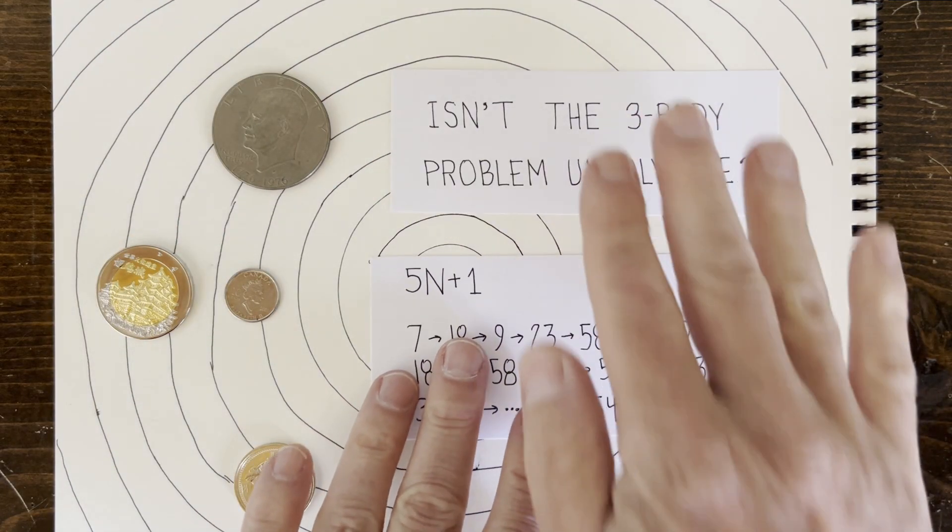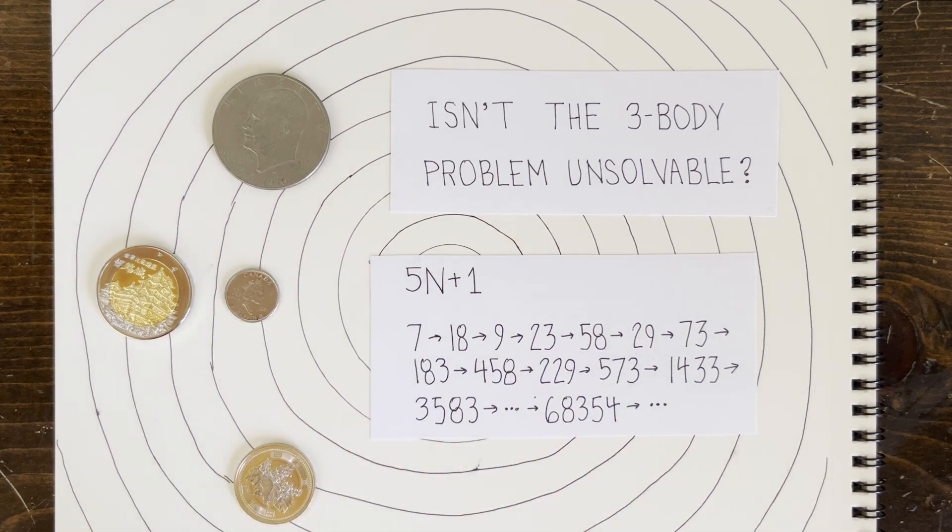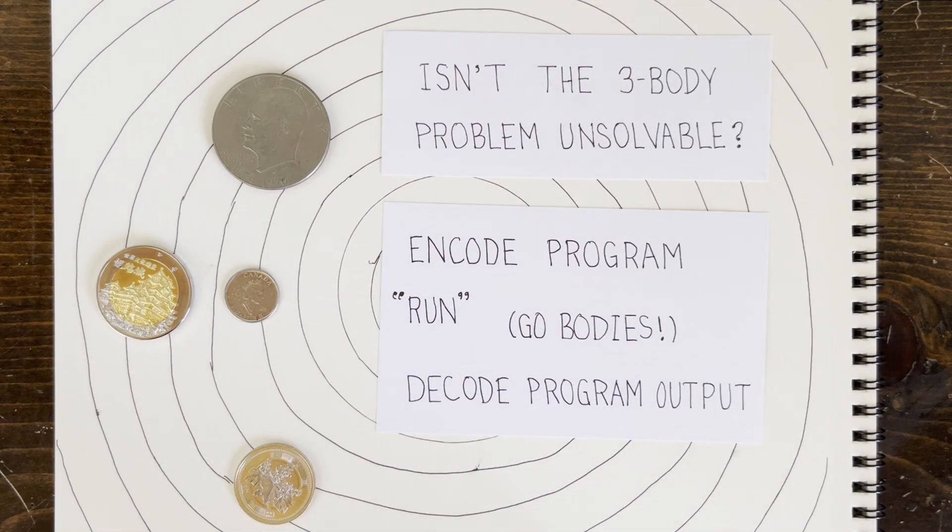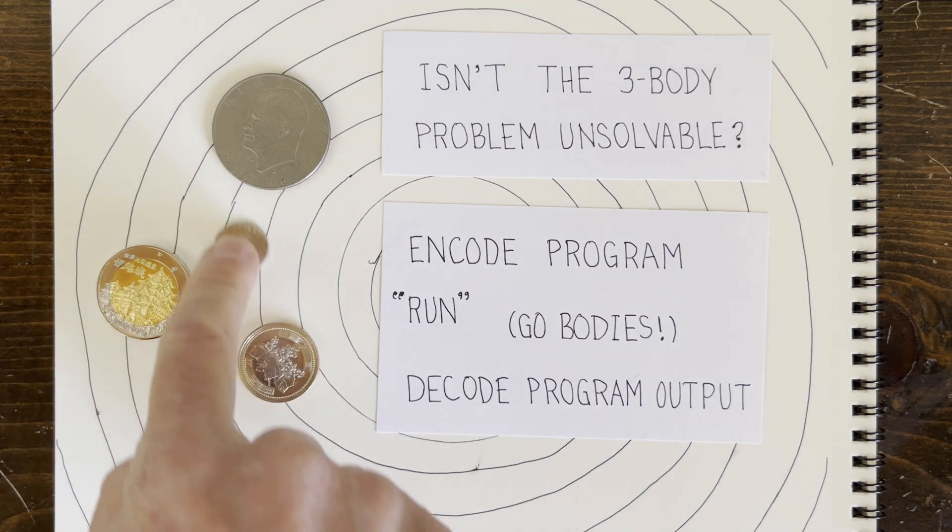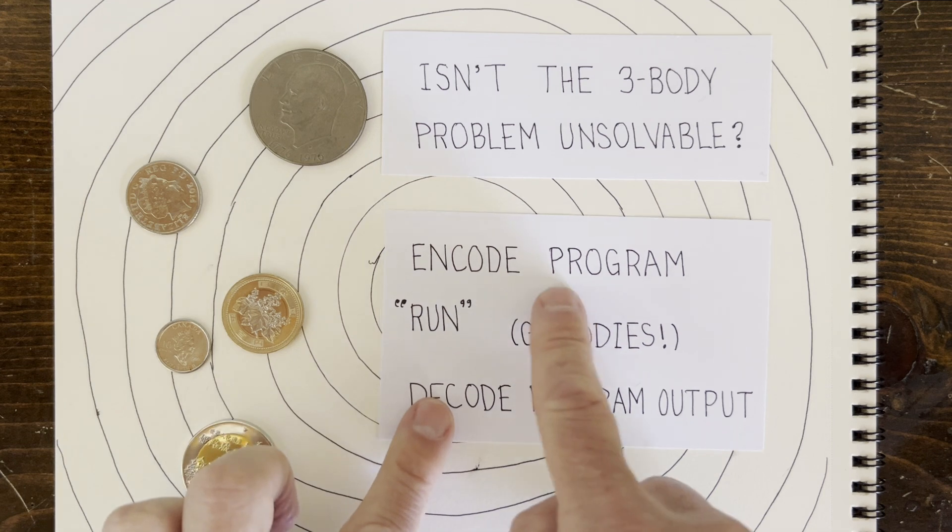Kind of like in the 5n plus 1 problem, where the start number 7 seems to just wander off. And just like in the 3n plus 1 problem, nobody knows whether the 3-body problem is Turing-complete. I mean, maybe you could cajole three celestial bodies not just into simulating 3n plus 1 trajectories, but into running any computer program.